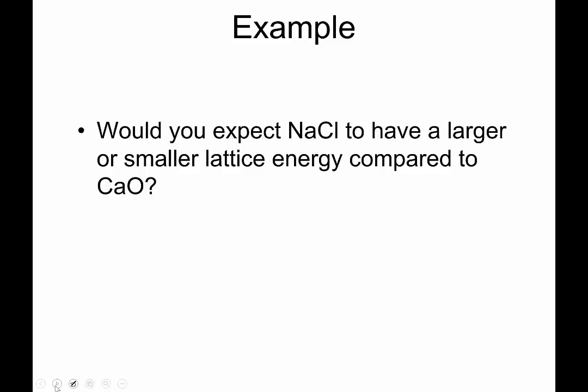Here's an example. Would you expect NaCl to have a larger or smaller lattice energy compared to CaO? Well Na is a plus, Cl is a minus. This is a 2 plus and a 2 minus. So this has more charges, so therefore this should have a higher lattice energy, which means NaCl would have a smaller lattice energy.